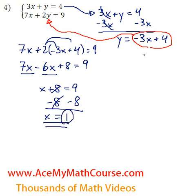Then I can just plug this back in here. So y is equal to negative 3 times 1 plus 4. Negative 3 times 1, negative 3 plus 4 is 1.